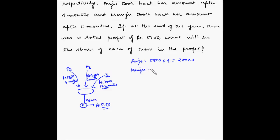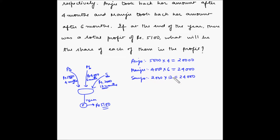Manju invested rupees 4,000 for six months, so her contribution is 4,000 × 6 = 24,000. Sanju invested rupees 2,000 for twelve months, so his contribution is 2,000 × 12 = 24,000. The ratio of the three contributions is 20,000 : 24,000 : 24,000, representing Anju, Manju and Sanju respectively.